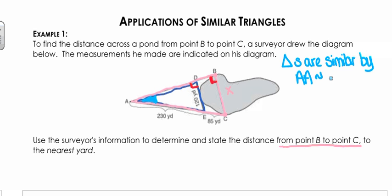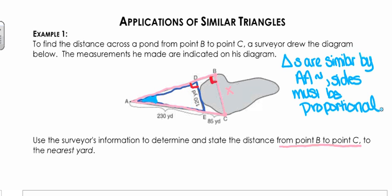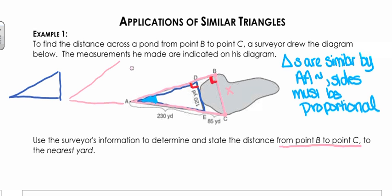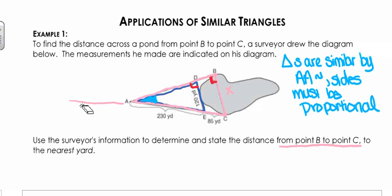Because they're similar by angle-angle similarity, the sides have to be proportional. As I did in the previous video on page 14, I'm going to take these two triangles and separate them from one another, because one of them sits on top of the other. I find this a really helpful and useful strategy. So I've got the blue one and I've got the pink one, and I'm going to redraw these a little bit better.